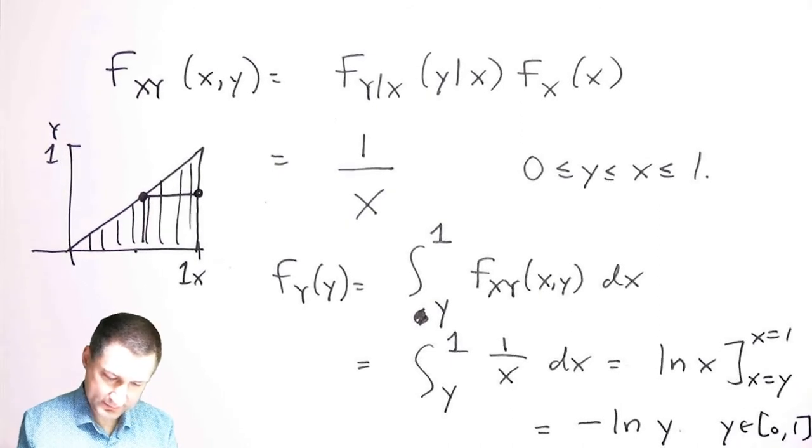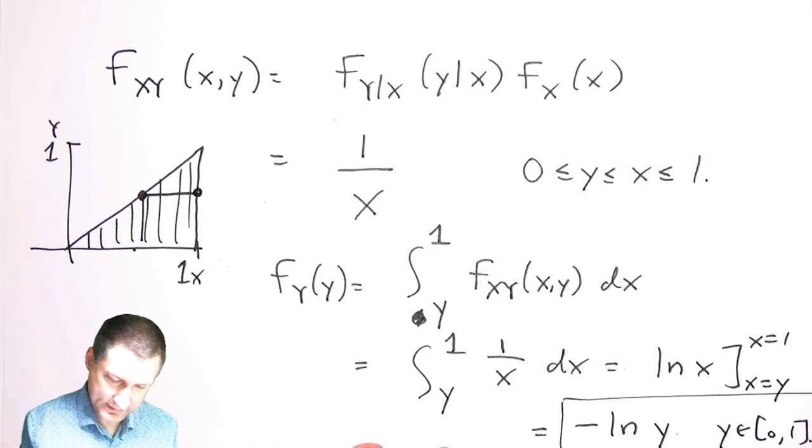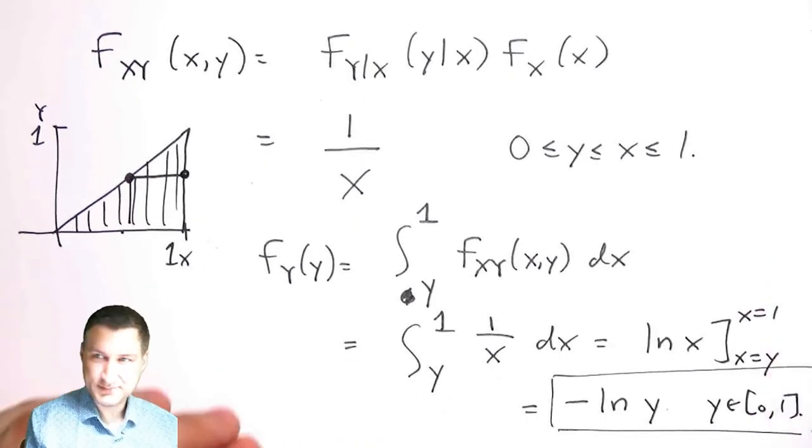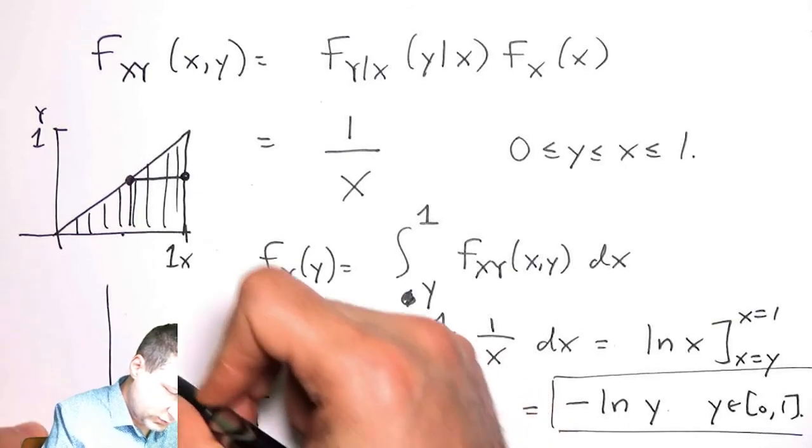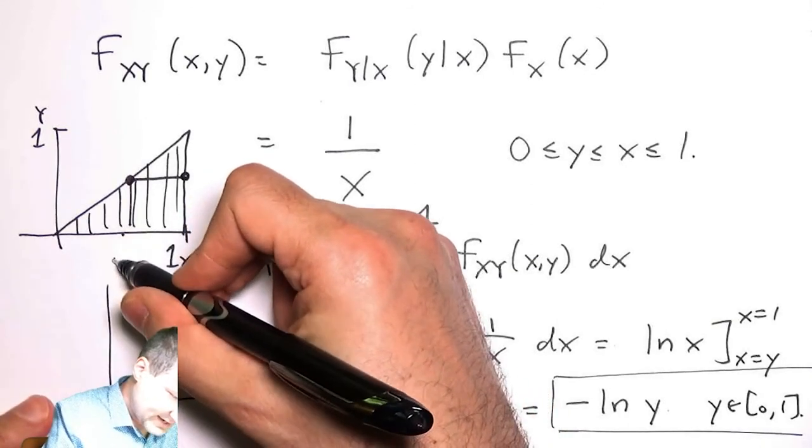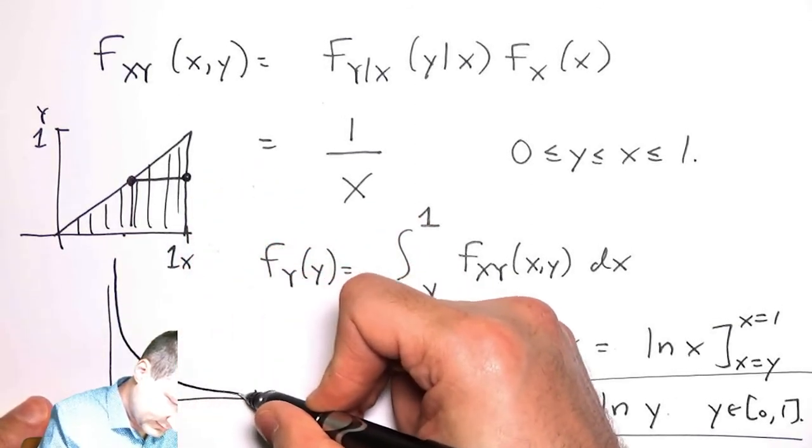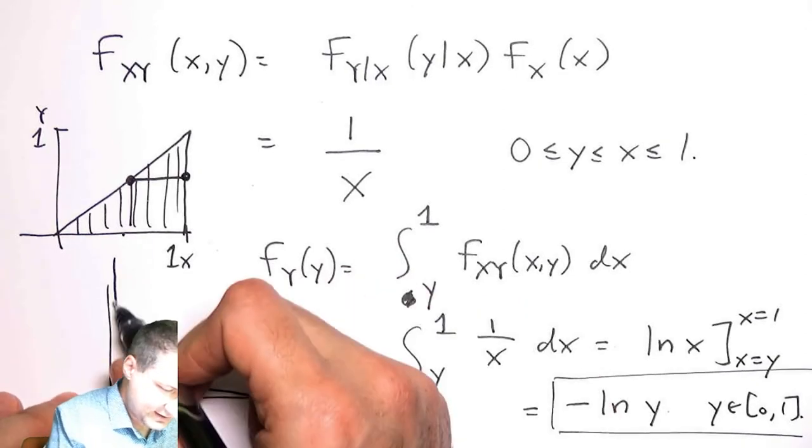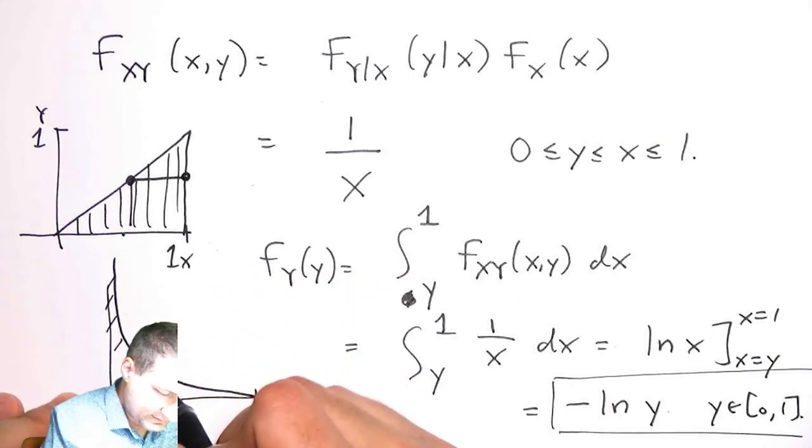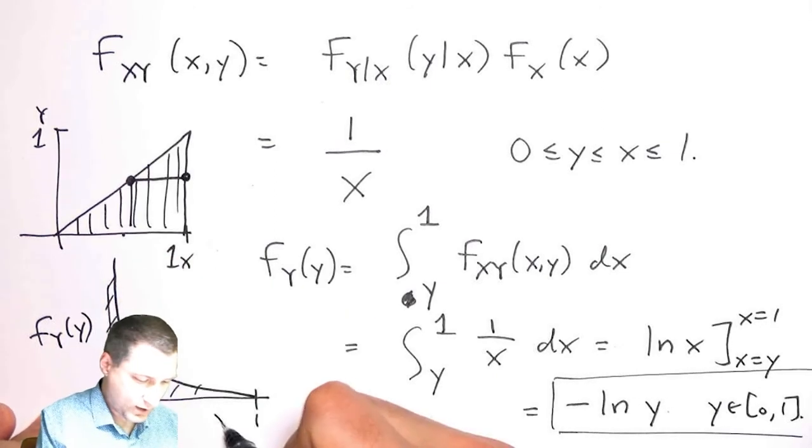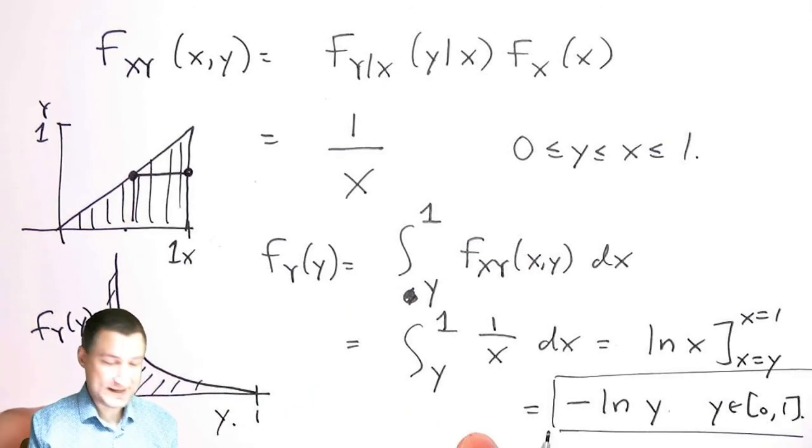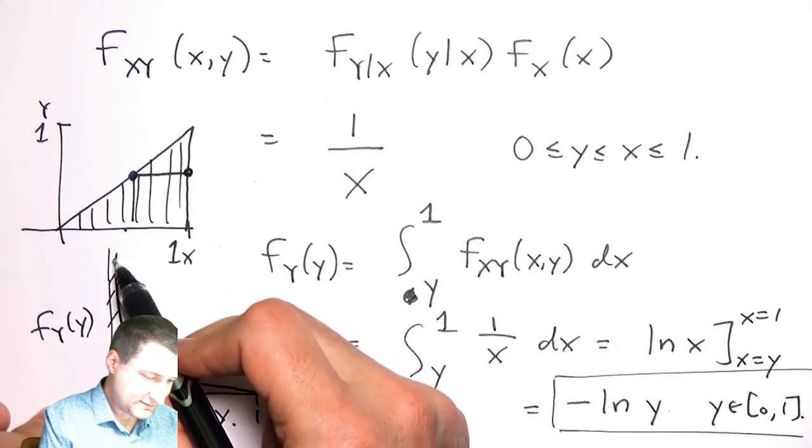Log 1 is 0, so I basically have negative log of Y, and then Y could range between zero and one. This is my answer. What does that look like? Basically, Y goes from zero to one and my PDF kind of has an asymptote because log of zero is minus infinity.